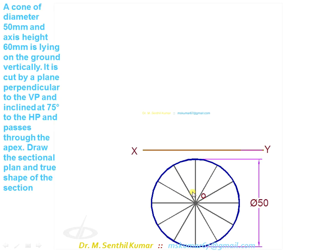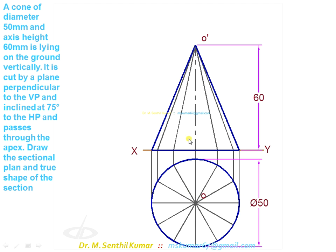This is the problem. With respect to that, complete the top view and front view first. Then introduce the section plane. Through o dash, draw a 75 degree line.